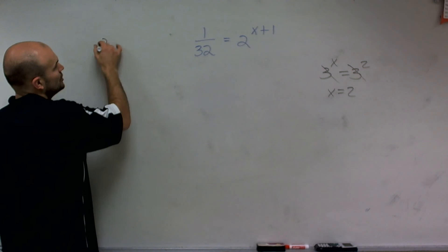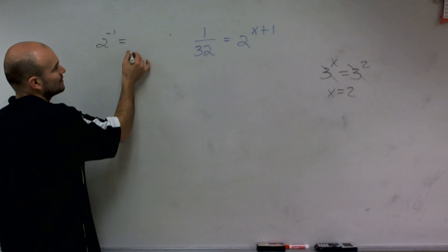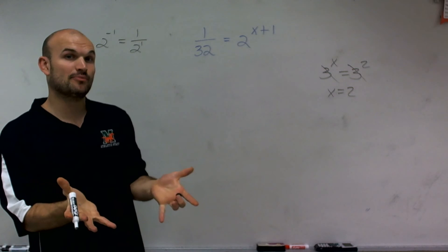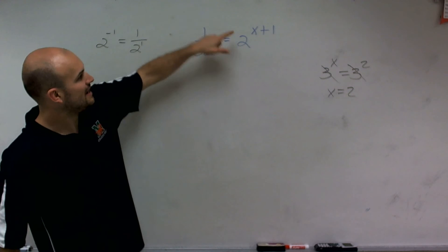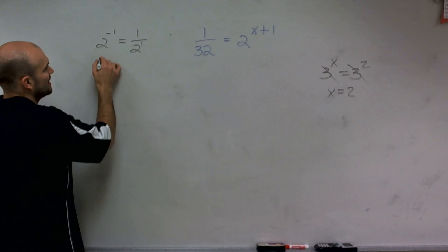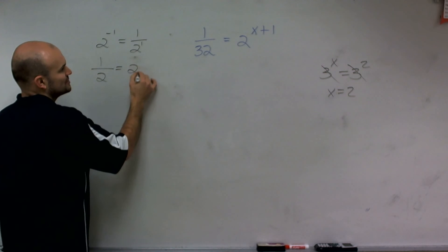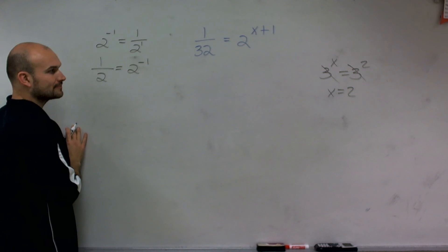First of all, 2 to the negative first power equals 1 over 2 to the first power. So that's a very important thing because I noticed that if I have a negative power, so if I had 1 over 2, I could rewrite that as 2 to the negative first power.